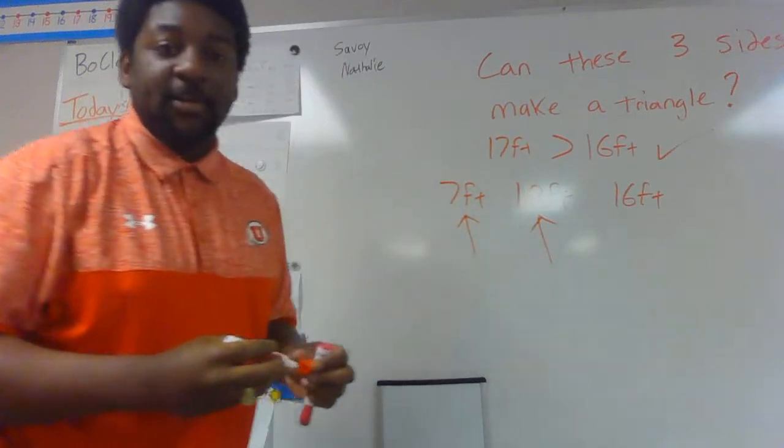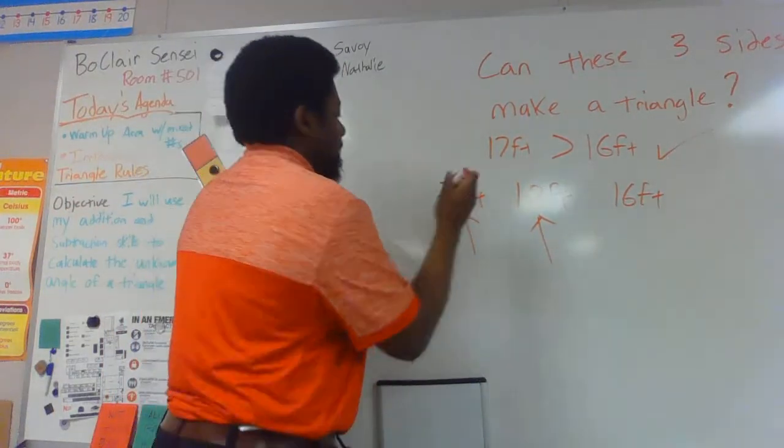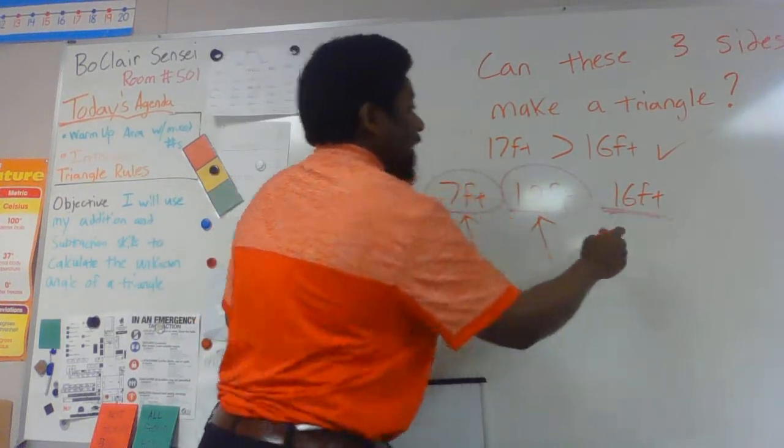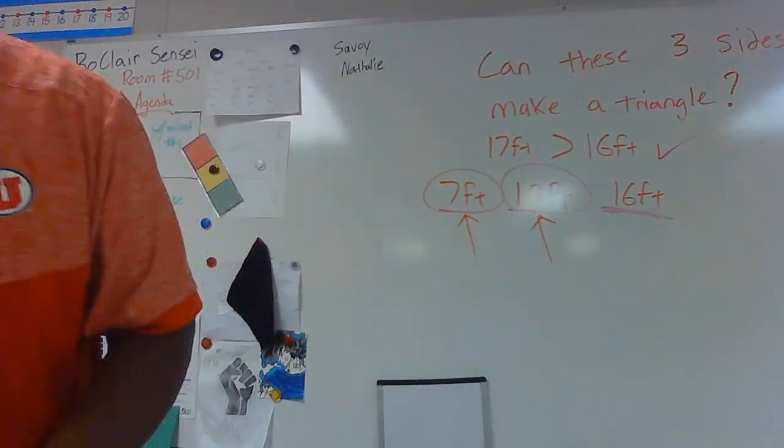I'm going to use a different color. Add up the two small sides. If they're bigger than the largest side, they do make a triangle. Let me do a couple more examples for you.